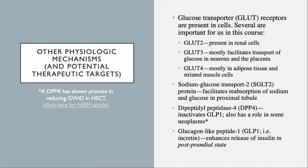There are some other physiologic mechanisms to understand — this is where all those funny initials come in. We talked about GLUT4 receptors. There are also GLUT2 receptors — in fact, there are about 15 of these things, not all of which we talk about clinically. GLUT2 cells are present in nephrons. GLUT3 protein facilitates transport of glucose in neurons and in the placenta. Not all cells require insulin — there are specialized neurons in the brain that do not require insulin.